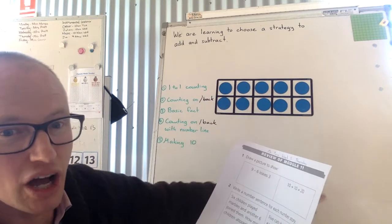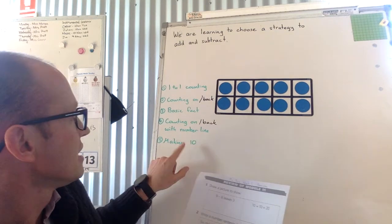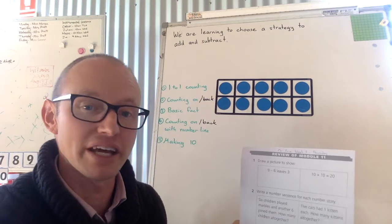Counting on or back using the number line, those little jumps that we do, or making 10 where you can make 10 and then add on the extra little bit.